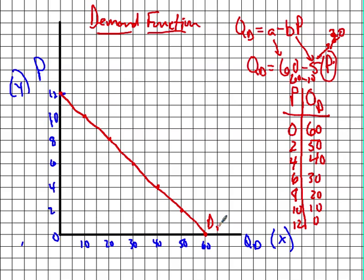This is our demand curve. Given this demand function — QD equals 60 minus 5p — we can plug in any price we want and figure out what the quantity demanded is. From that, we can draw it out. That's the first part we want to look at.